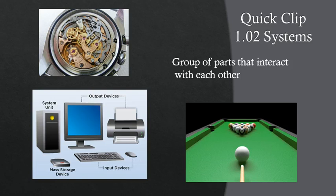A system is a group of parts that interact with each other. On the screen you can see three examples of systems. Over here on the bottom right you can see a picture of a pool table where all of the billiard balls are all parts of the same system on the table.